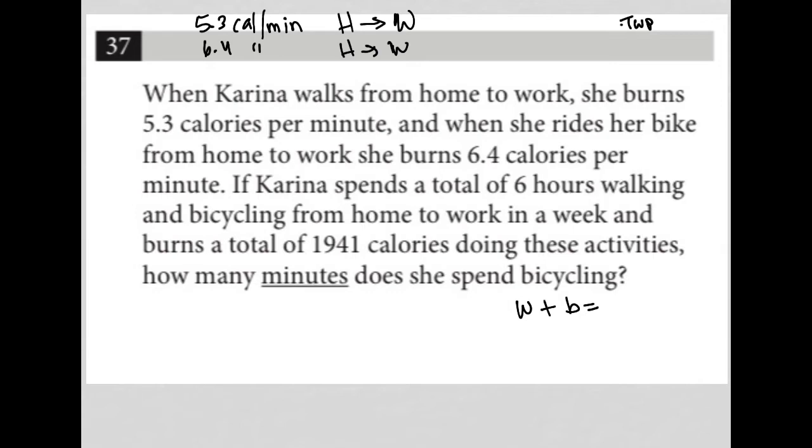So I'm going to say six, but I don't like six. Why don't I like it? The calories were given per minute and now we're getting time in hours. So I'm going to convert that to minutes. So W plus B equals 360 minutes, right? Six hours times 60 minutes per hour is 360 minutes. So that's the number of minutes that she bikes and walks from home to work in a week.